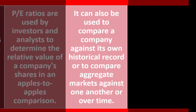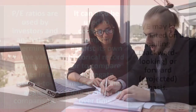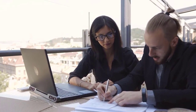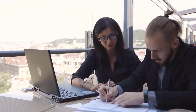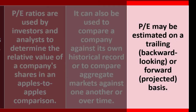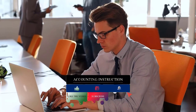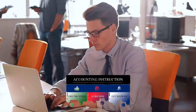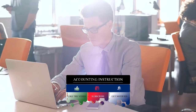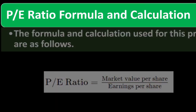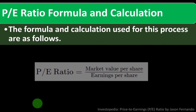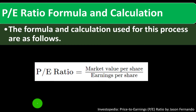It can also be used to compare a company against its own historical record, or to compare aggregate markets against one another or over time. We can compare it to other companies, markets, or industries, or look at a company's own performance over time. The PE may be estimated on a trailing, backward-looking basis or on a forward projected basis.